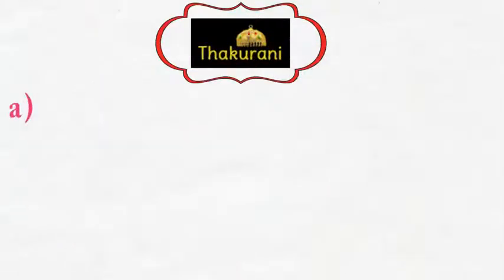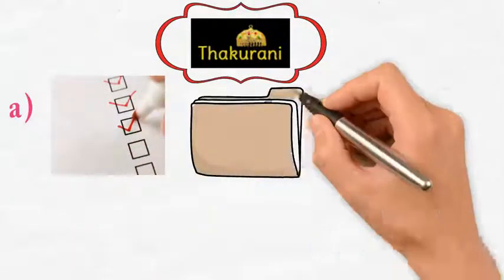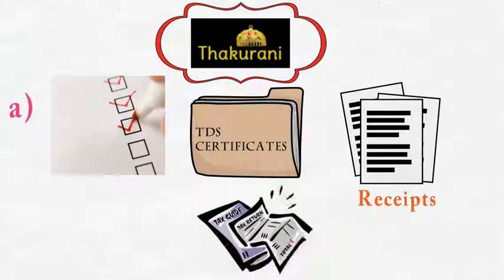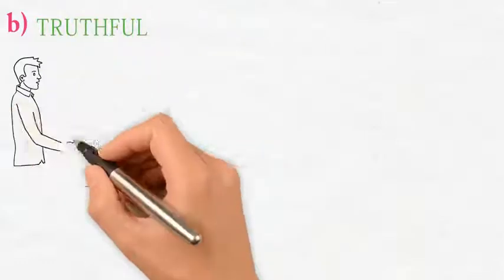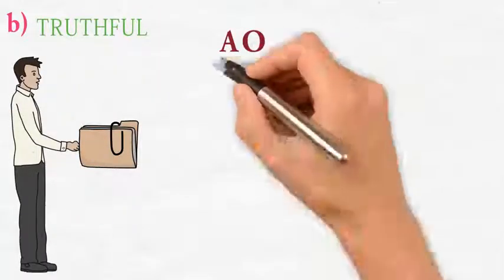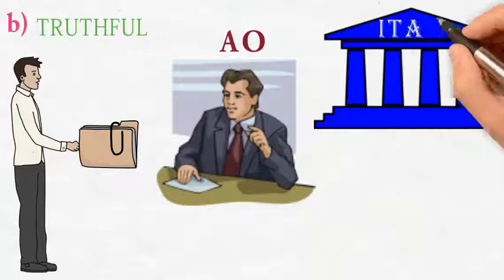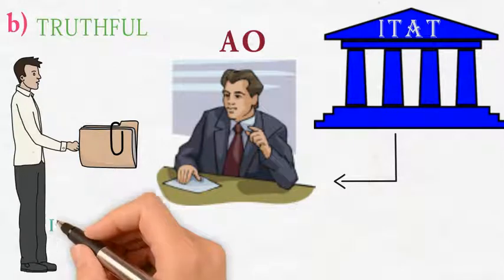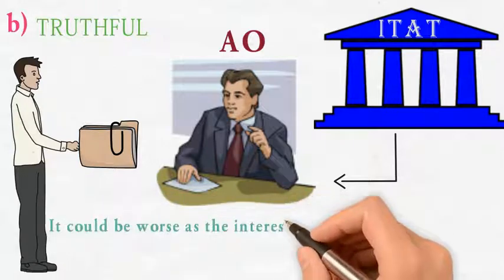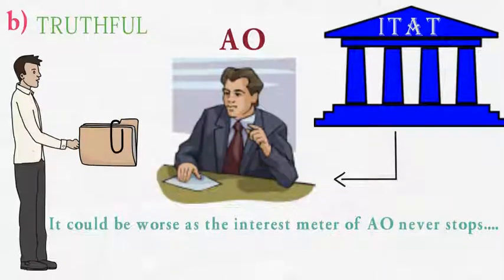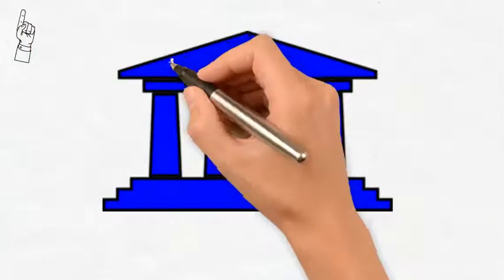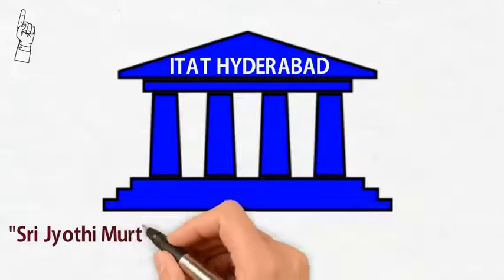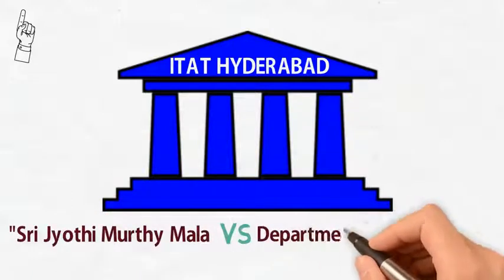The key takeaways are: match the receipts mentioned in the TDS certificates with your receipts well before filing your tax returns, and be truthful and present everything before the AO — otherwise, ITAT will remit the case back to the AO again. It could be worse, as the interest meter never stops. The above is a description of the decision of ITAT Hyderabad in the case of Shri Jyoti Murthy Mala vs. Department of Income Tax.